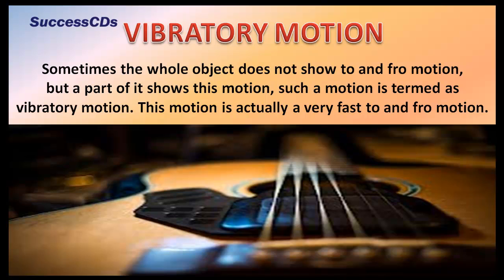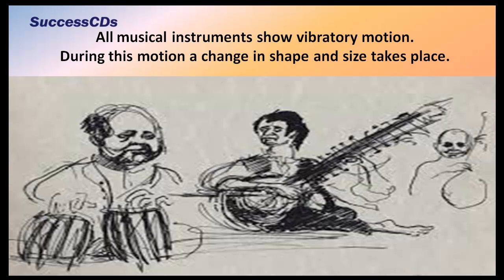Sometimes the whole object does not show to and fro motion, but a part of it does. Such motion is termed vibratory motion. This is actually a very fast to and fro motion — for example, the strings of a guitar when plucked. All musical instruments show vibratory motion.